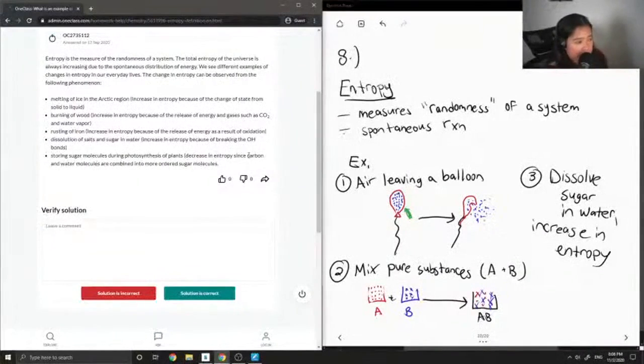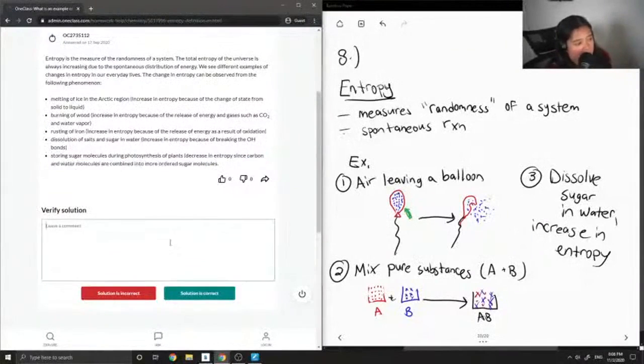When you have carbon and water molecules combined, this requires energy. Therefore, this reaction is not spontaneous since it requires energy, and that's the energy you get from the sun in photosynthesis. This solution is correct.